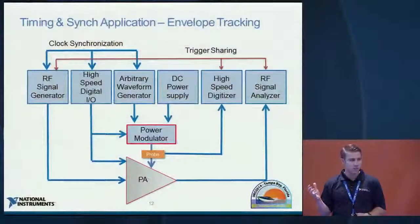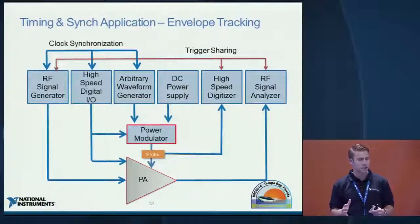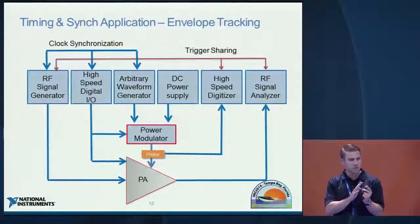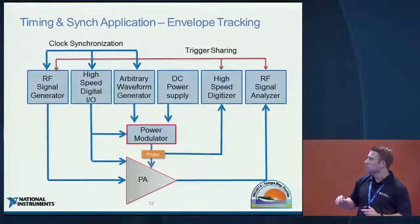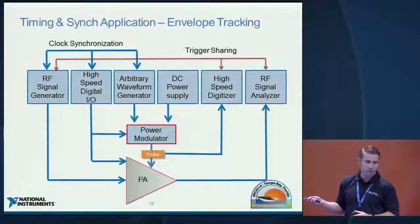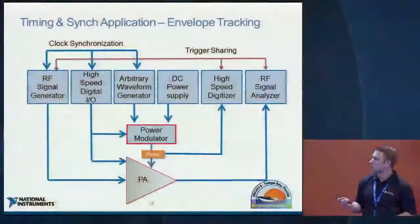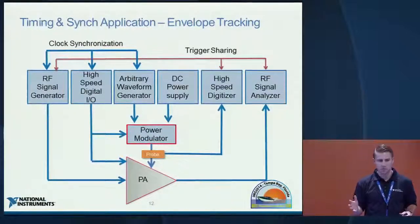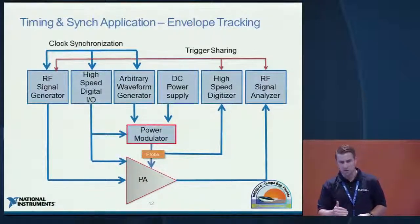These timing features are critical in applications like envelope tracking. In envelope tracking, you're modulating the supply line of a power amplifier, and the waveform modulating that supply line needs to be in very tight time synchronization with the RF waveform going through the power amplifier. The arbitrary waveform generator feeding the power modulator must be tightly synchronized with the RF generator — these backplane timing and synchronization features enable picosecond-level synchronization. Trigger sharing between generator and analyzer also lets you capture precisely the right segment of data without wasting memory on unwanted data.